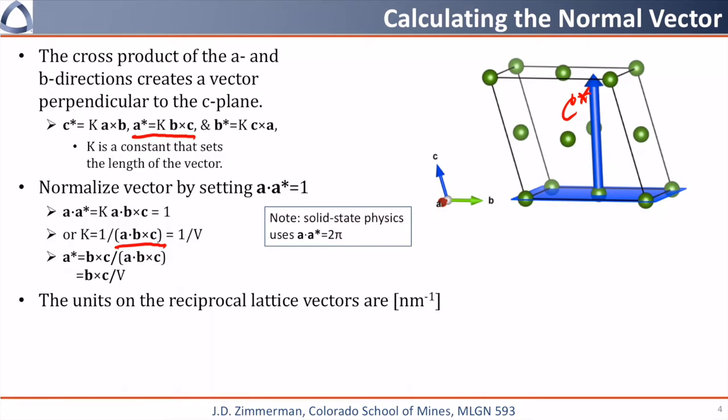The cross product has units of area, and when we divide that by the units of volume, you get units of inverse length, which is typically inverse nanometers in crystallography.